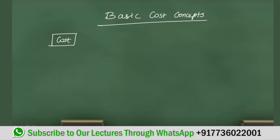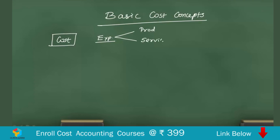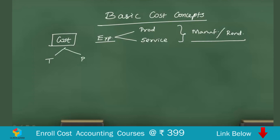Before that, let us understand what is cost. Cost is nothing but an expenditure incurred in producing a product — that is from the manufacturer's point of view — or incurred in rendering a service. So cost is basically an expenditure which is incurred in producing a product or in rendering a service. The point of view is from the person who is manufacturing or rendering the service, not from the consumer or end user.